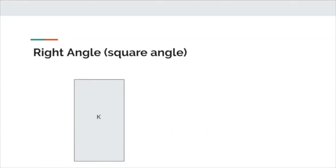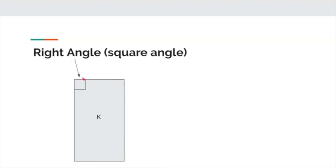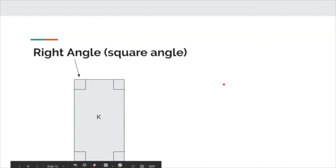For our last attribute today, we're going to look at angles. An angle is where two sides meet. For this rectangle, we know there's one angle here, two, three, and four. In math, when an angle makes a sharp corner we call it a right angle — or if that's hard to remember, a square angle — because it makes a tiny little square. This shape has four right angles: one, two, three, four right angles or square angles.